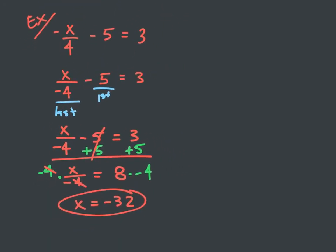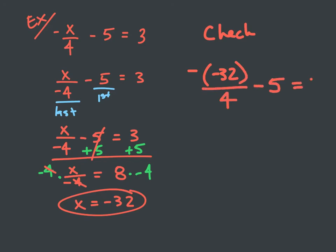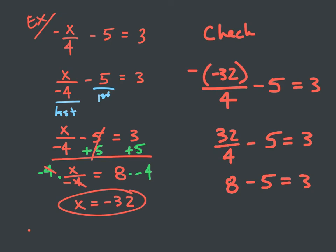Let's check this by plugging it back into the original equation. Substituting x equals negative 32, I have negative negative 32 over four minus five equals three. Subtracting a negative turns into a positive, so that becomes 32 divided by four minus five equals three. 32 divided by four is 8, and 8 minus 5 equals 3, which equals 3. That's true, so x equals negative 32 is my solution.